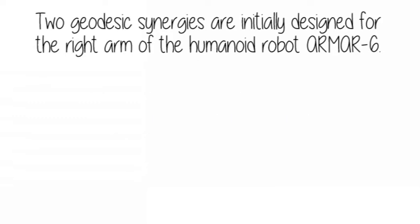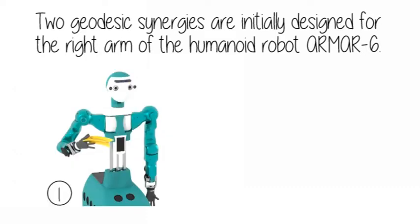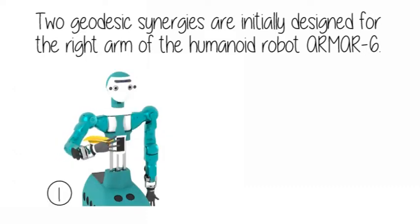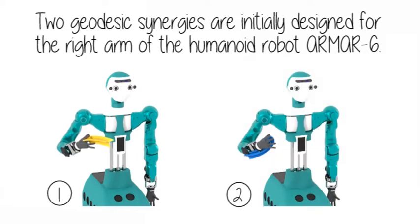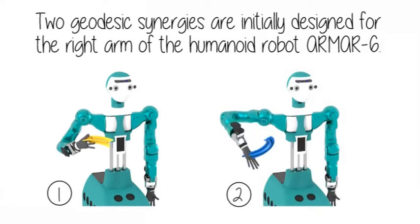Two geodesic synergies are initially designed for the right arm of the humanoid robot R6. They are characterized by their initial position and initial velocity on the tangent bundle of the robot configuration manifold.